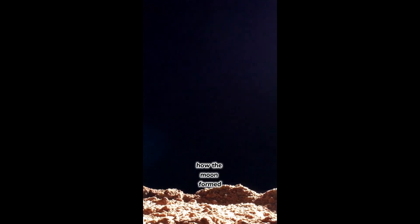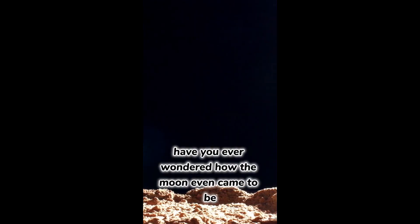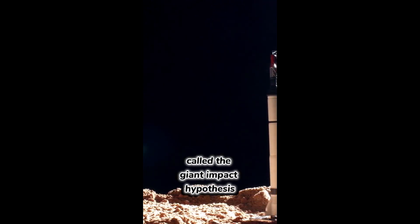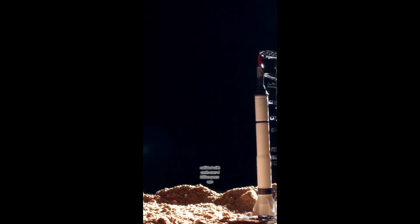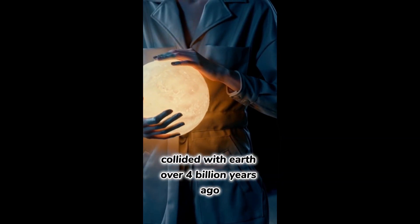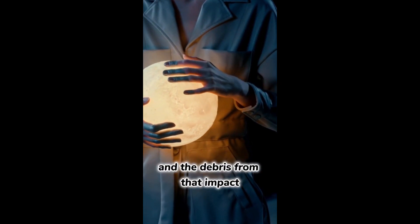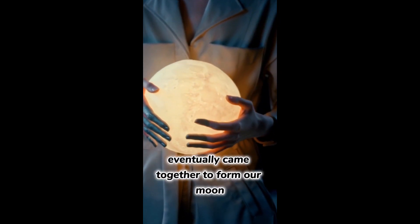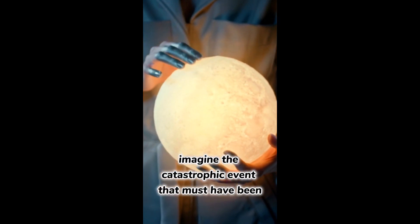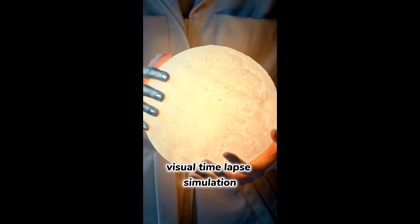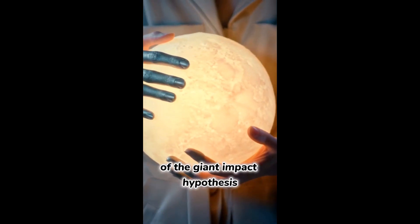Shot 1: How the moon formed. Have you ever wondered how the moon even came to be? Scientists have a theory called the Giant Impact Hypothesis. This theory suggests that a Mars-sized object collided with Earth over 4 billion years ago, and the debris from that impact eventually came together to form our moon. Crazy, right? Imagine the catastrophic event that must have been. Time-lapse simulation of the Giant Impact Hypothesis.